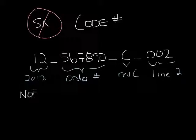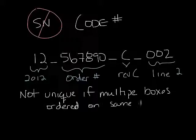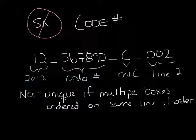The main difference between our code number and a true serial number is that it's not always unique. For instance, if several identical units are ordered on the same line item, they'll have the same code number. But if only single items are ordered on each line, then the code number is basically the same as the serial number.